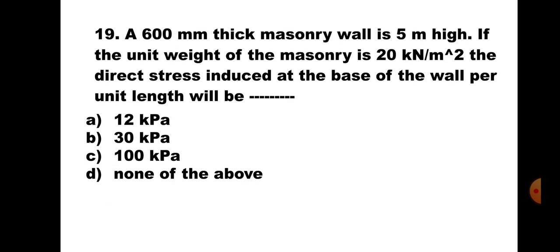Question number 19: A 600 mm thick masonry wall is 5 meters high. If the unit weight of masonry is 20 kN per meter cube, the direct stress induced at the base of the wall per unit length will be A. 12 kPa, B. 30 kPa, C. 100 kPa, D. None of the above. Direct stress is calculated as rho into H, so 20 into 5 equals 100. The correct answer is C. 100 kPa.